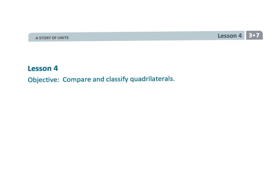And that wraps up a quick one. Third grade module seven lesson four students are comparing and classifying quadrilaterals.